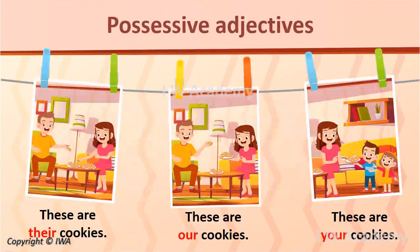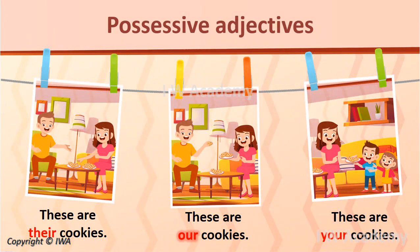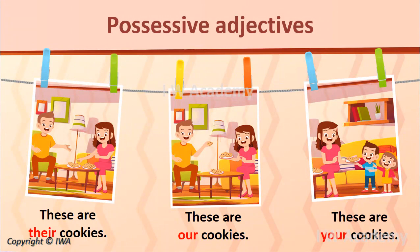So we can say that 'their' refers to something that belongs to more than one person. 'Our' refers to something that belongs to more than one person, including the speaker. 'Your' refers to something that belongs to a person or more than one person that you are talking to. Let's say the words together.